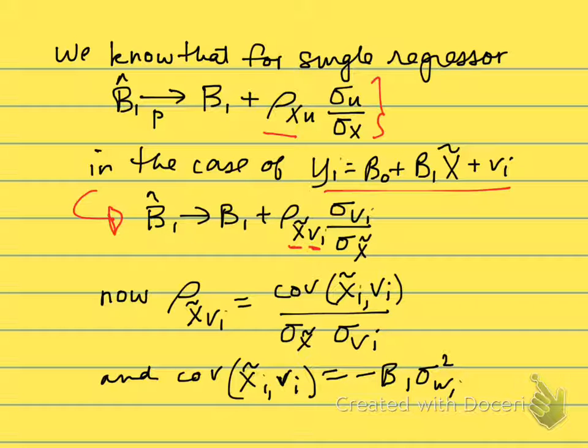Now when we think about this correlation between X̃ and vᵢ, the correlation coefficient is equal to the covariance of X̃ and vᵢ divided by the standard deviation of X̃ times standard deviation of vᵢ. That's just the definition of what the correlation coefficient is. Now it's pretty easy to show that the covariance of X̃ and vᵢ is equal to -β₁ times σ²w.